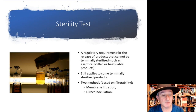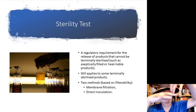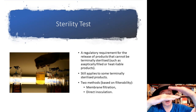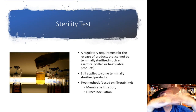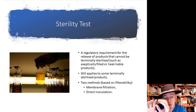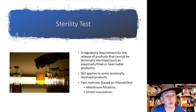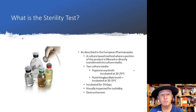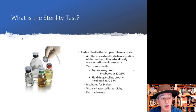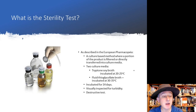There are two methods. The first is membrane filtration, where the product is filtered through a membrane and bacteria are trapped on the filter face. The broth used is tryptone soya broth, otherwise known as soybean casein digest medium, incubated at 20 to 25 degrees Celsius, designed to pick up aerobic bacteria and fungi.